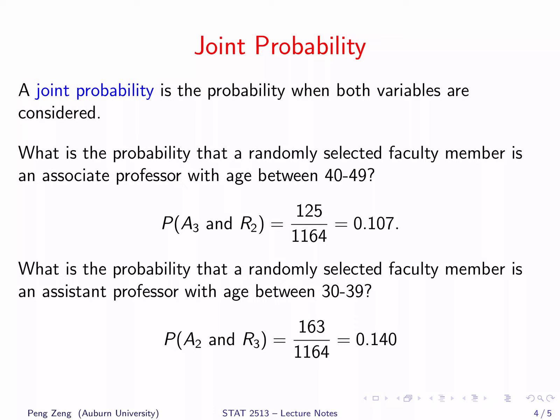Let's check two examples. What is the probability that a randomly selected faculty member is an associate professor with age between 40 to 49? In terms of notation, this event corresponds to A3 and R2. We may locate the corresponding cell in the contingency table. It shows that 125 faculty members are associate professors in their 40s. Therefore, the joint probability is 125 over 1164, which is 0.107.